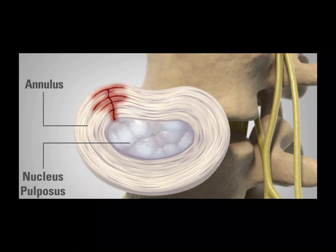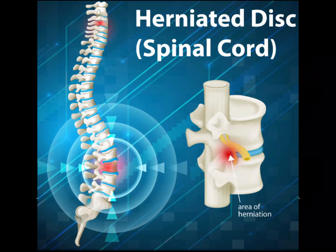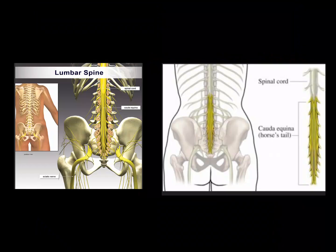Sciatica is nerve pain due to injury or irritation to your sciatic nerve, which runs through your hips, buttocks, and down each leg ending in your foot. Causes include herniated discs, spondylolisthesis, osteoarthritis, trauma to your spine or nerves, or a tumor in your spinal canal. A herniated disc is a compressed, torn, or leaking vertebral disc — the cushion between each vertebra — and can cause back pain, tingling or numbness in your legs or feet, or muscle weakness.